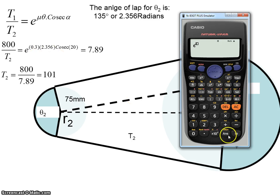So e to the power of 0.3 by 2.356 by the cosecant of 20. So cosecant is 1 over the sine of 20. So when I plug that into the calculator, I get 7.897.